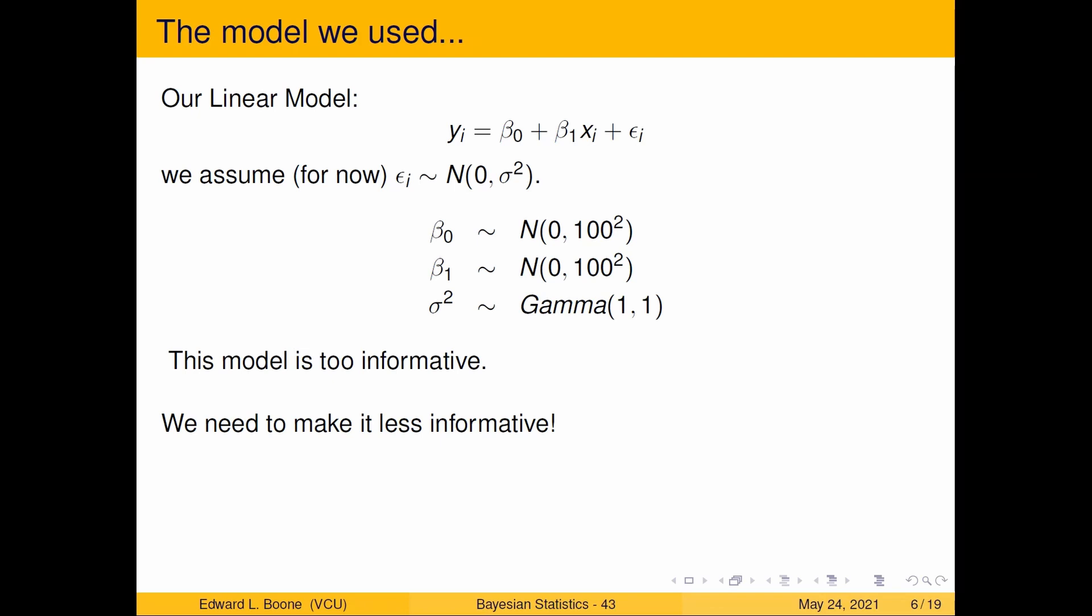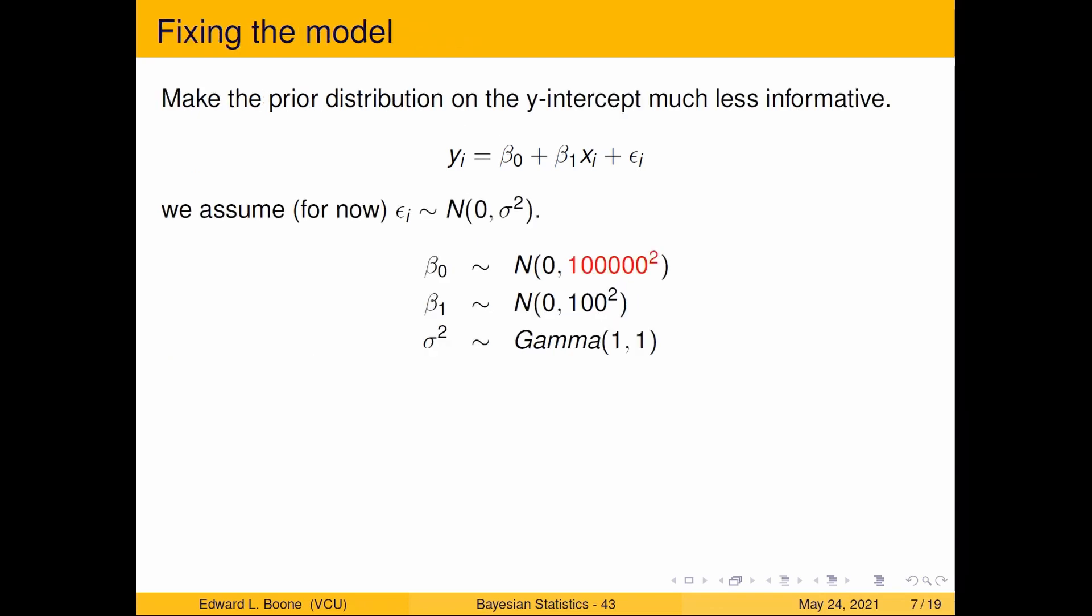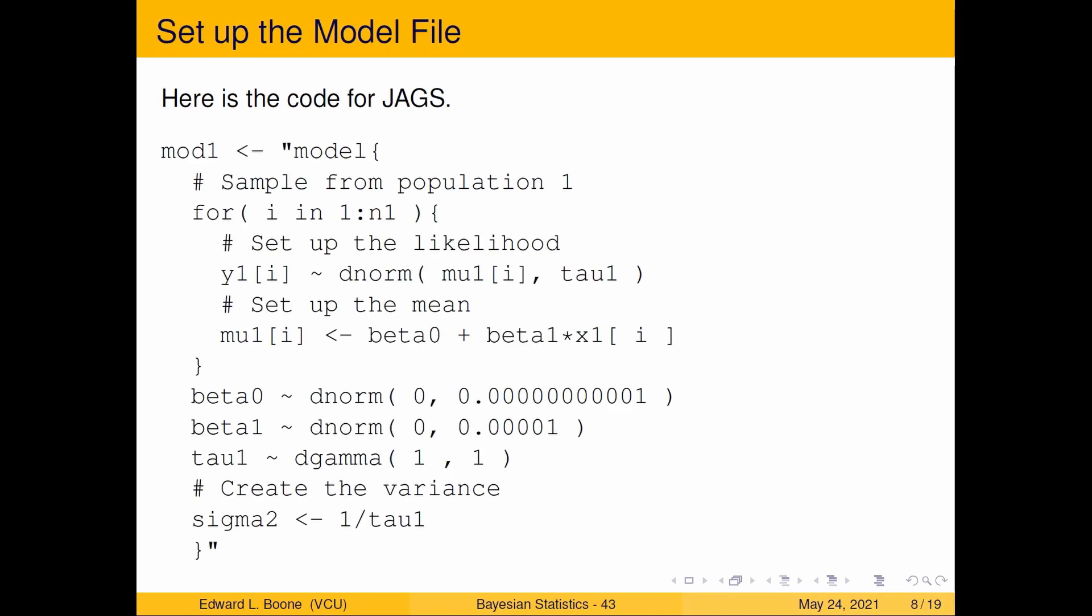What did I do? I changed it from a hundred to a hundred thousand. This is way bigger than the last time. The reason I wanted to do this is so that the intercept should be able to take on really big values. This is precision, so this should give me a really really diffuse prior distribution for beta zero, which is exactly what I need. Everything else is the same. This is the only thing I changed, was this bit right here.